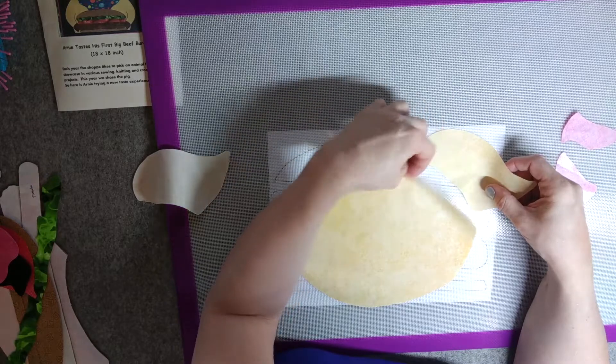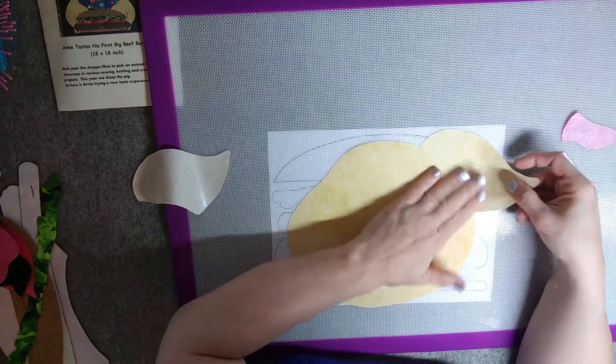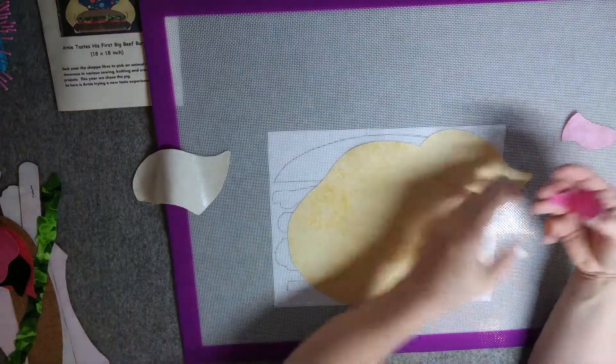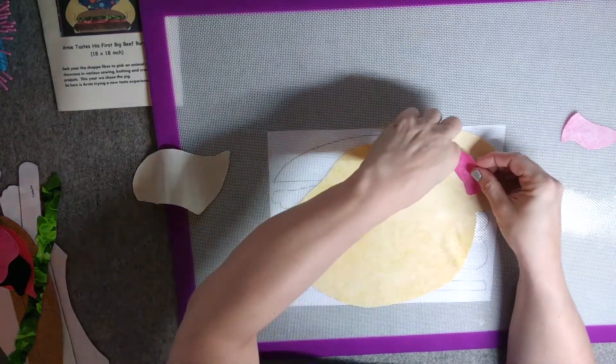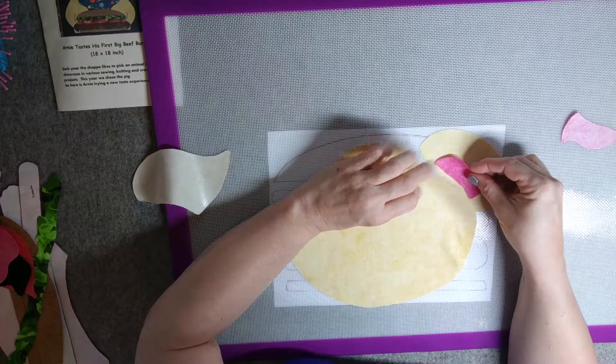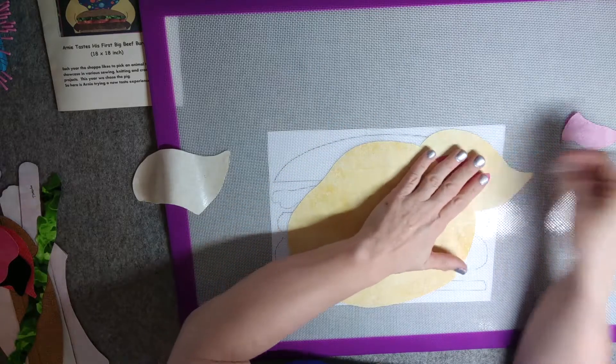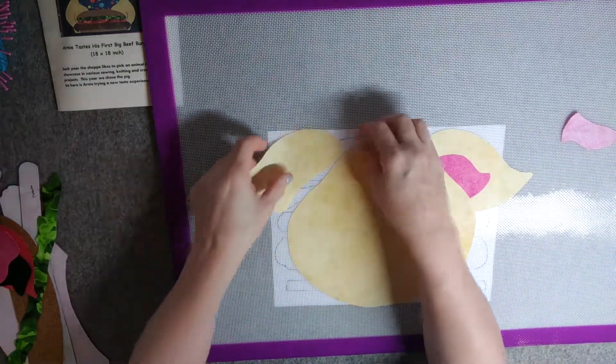There's one ear, tuck this underneath, then here's his other ear and it goes over here. Let's see what happens when we iron this. All right, so we're ready to iron. Let's see what happens.